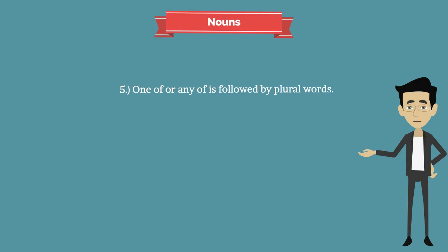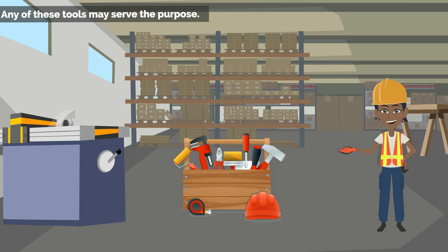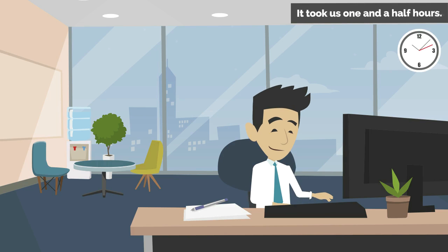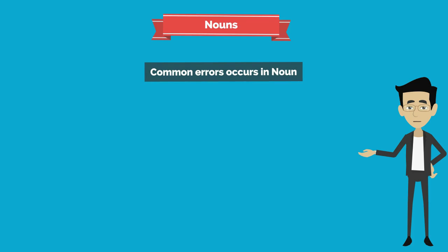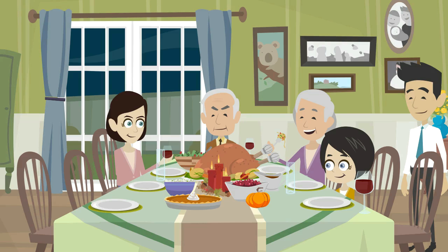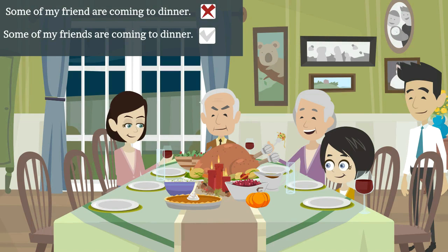The fifth rule: 'one of' or 'any of' is followed by plural words. Common errors: the noun following 'none of,' 'some of,' or 'one of' must be plural, but the verb agrees in number with the subject. Incorrect: 'Some of my friend are coming to dinner.' Correct: 'Some of my friends are coming to dinner.'